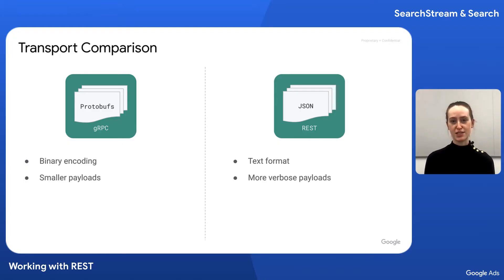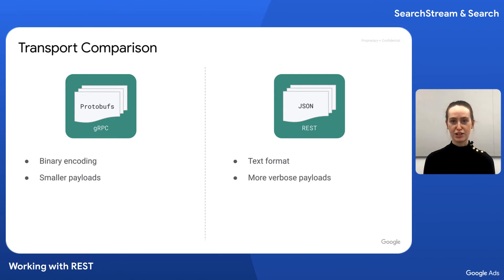Before I get into the differences between searchstream and search, let's review some of the differences between gRPC and REST. gRPC uses protocol buffers, or protobufs, as its payload format. Protobuf messages are binary encoded, which makes for relatively small payload sizes. In comparison, REST uses JSON, whose text format makes for larger, more verbose payloads. You'll see later on in the video how this looks for search and searchstream.